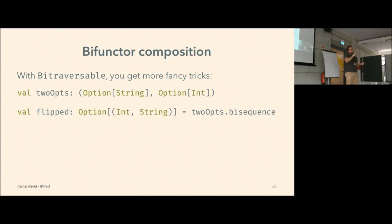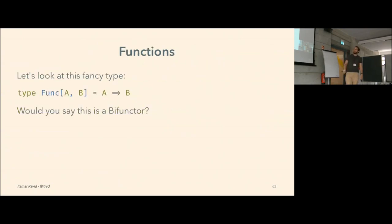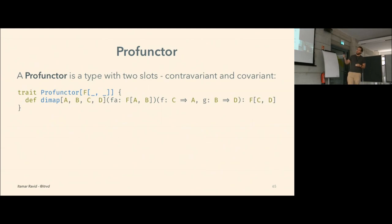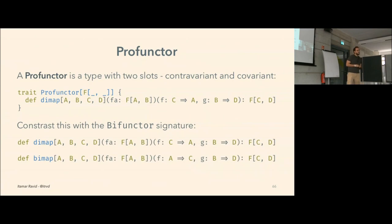Here's a fancy type — just a function. Would you say this is a bifunctor? We've seen that bifunctors should behave covariantly in each type parameter, and we've seen that functions behave contravariantly in their input. So this is actually a profunctor. A profunctor is kind of like a bifunctor, defined by `dimap` instead of `bimap`. The only difference is that the function applied to the left type parameter is contravariant. The profunctor preserves identity in both type parameters and preserves contravariant composition in the left and covariant composition in the right type parameter.